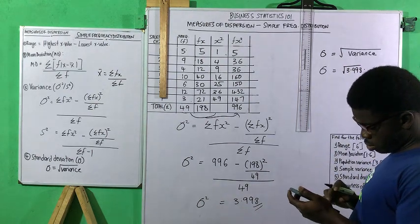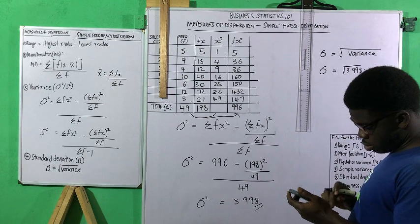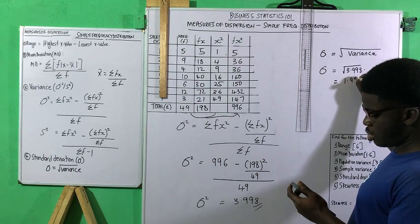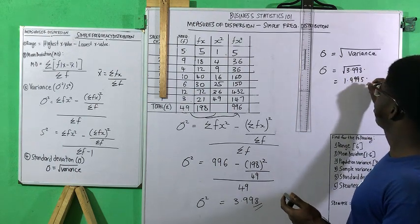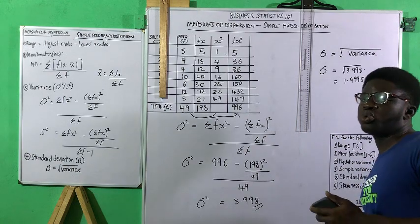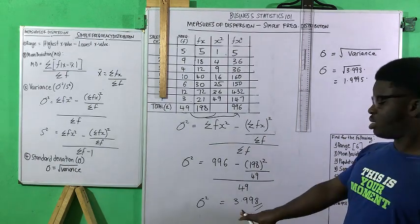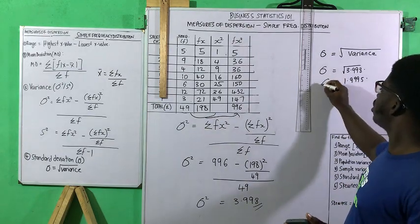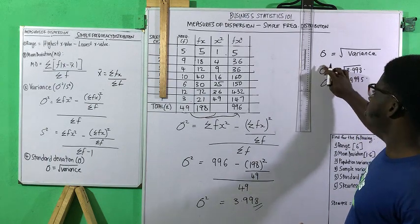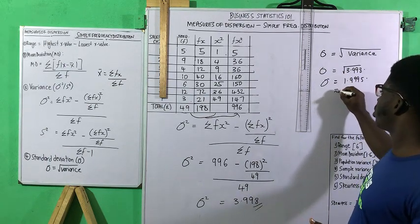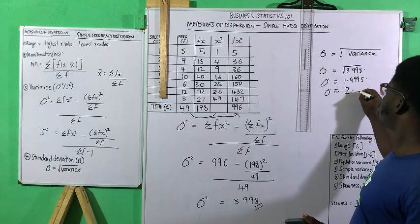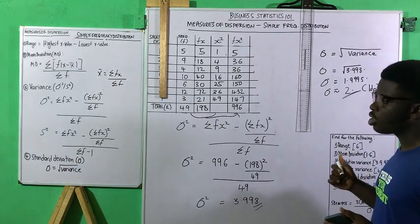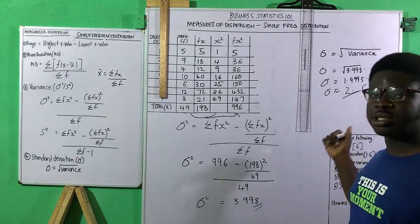So this becomes the square root of 3.998, which gives 1.995. You can choose to approximate your answer. If you first approximate the variance to one decimal place, you get 4. Taking the square root of 4 gives you 2. So depending on how you round, your standard deviation is approximately 2.0 to one decimal place.